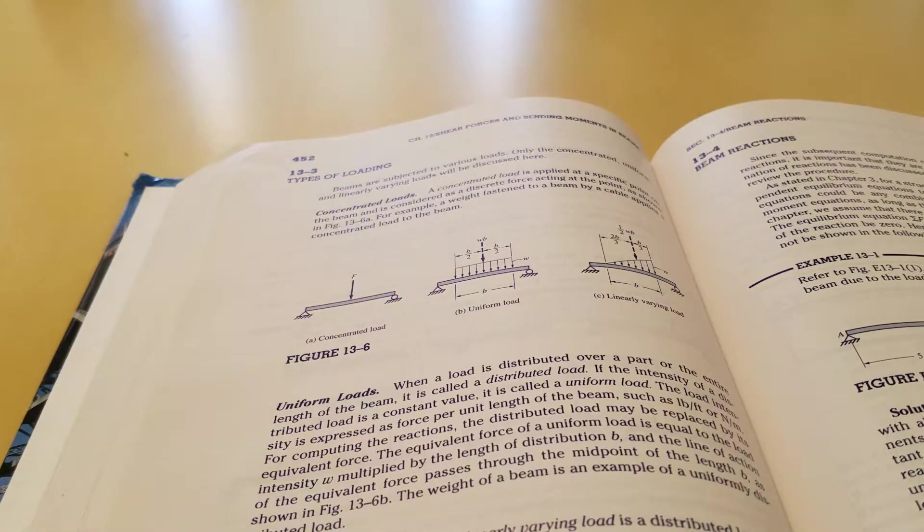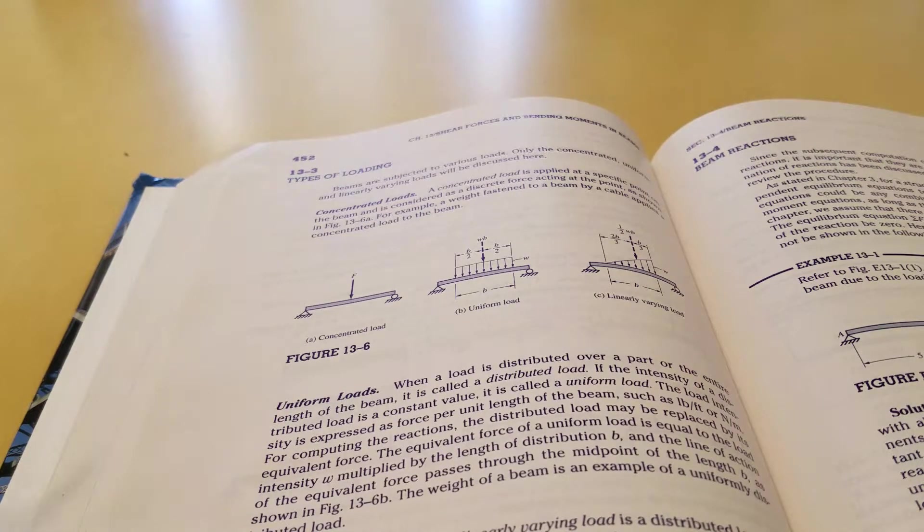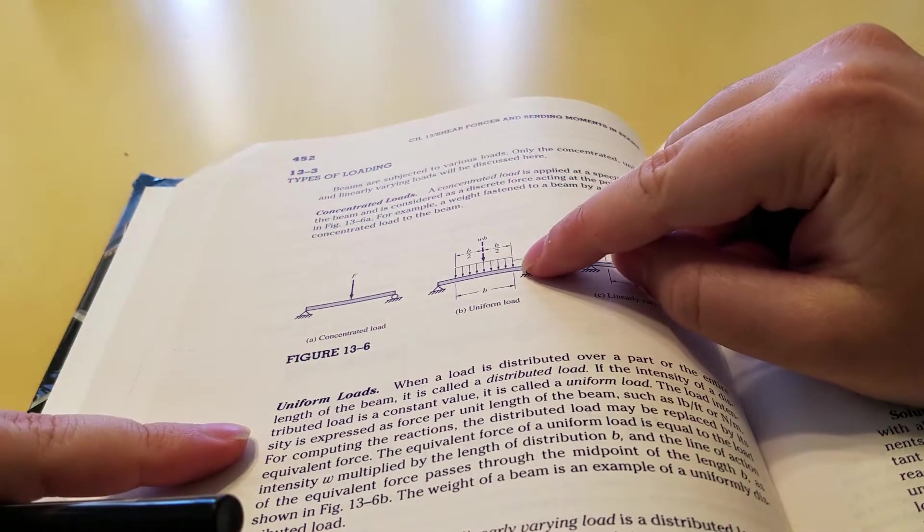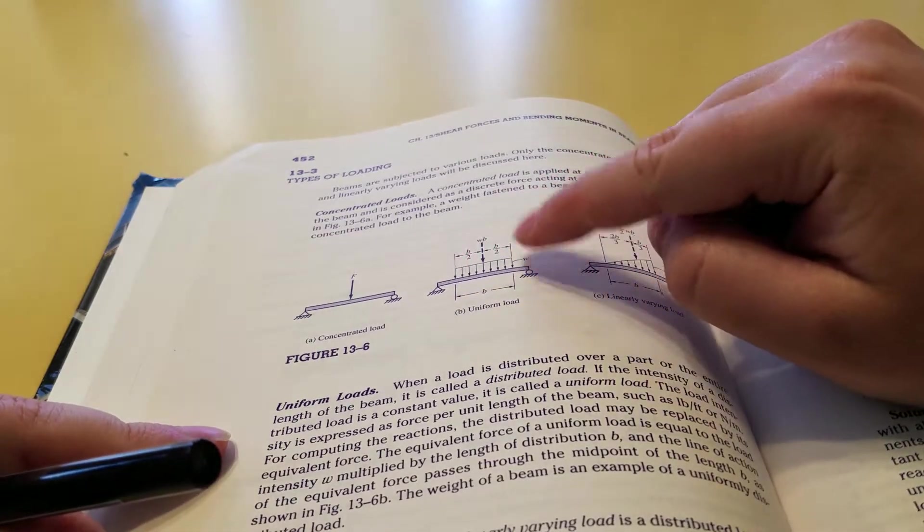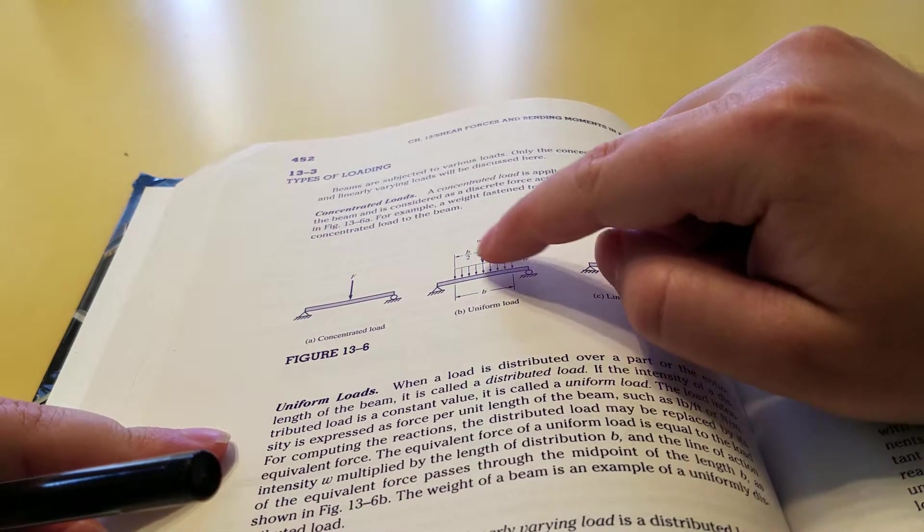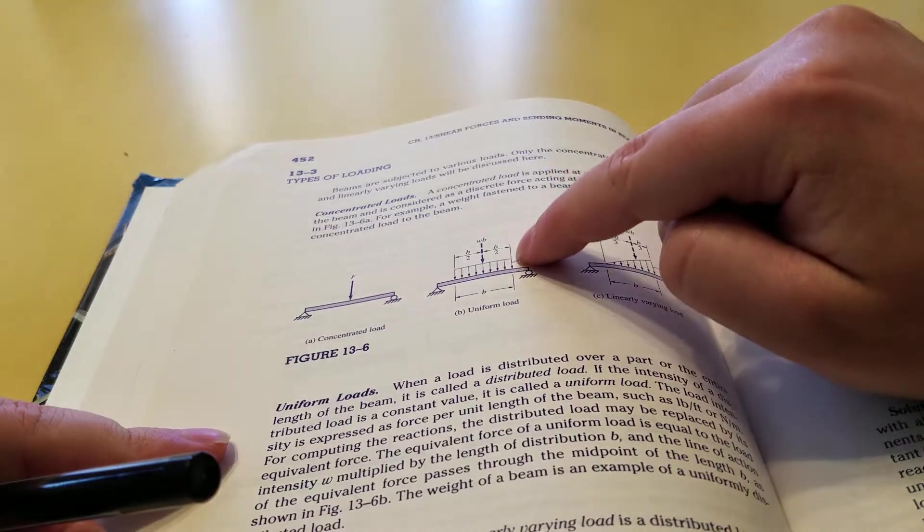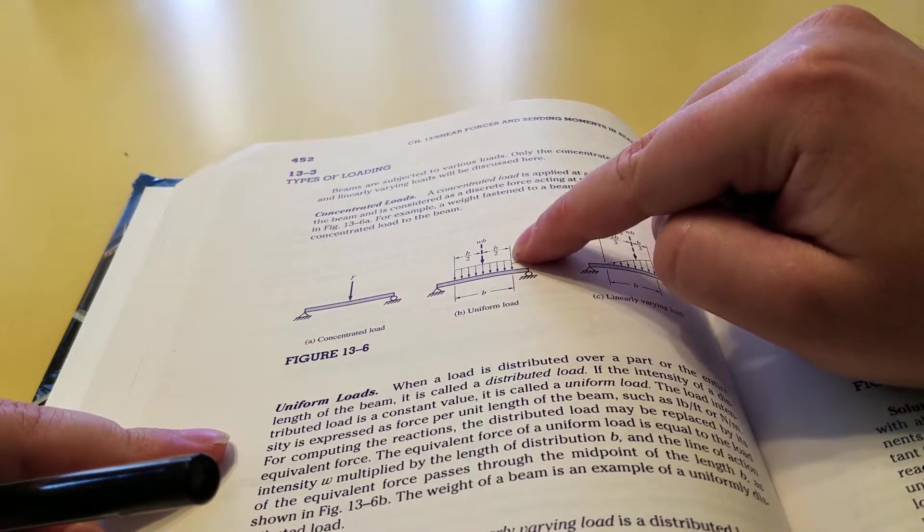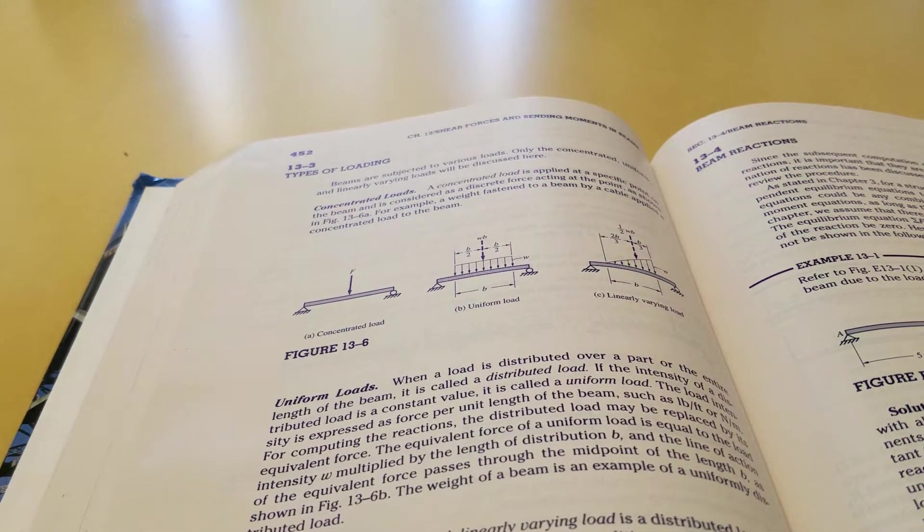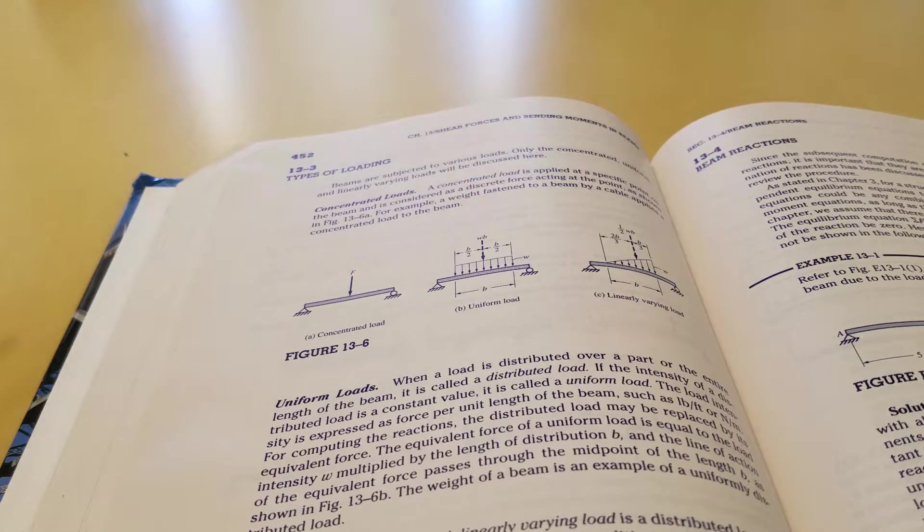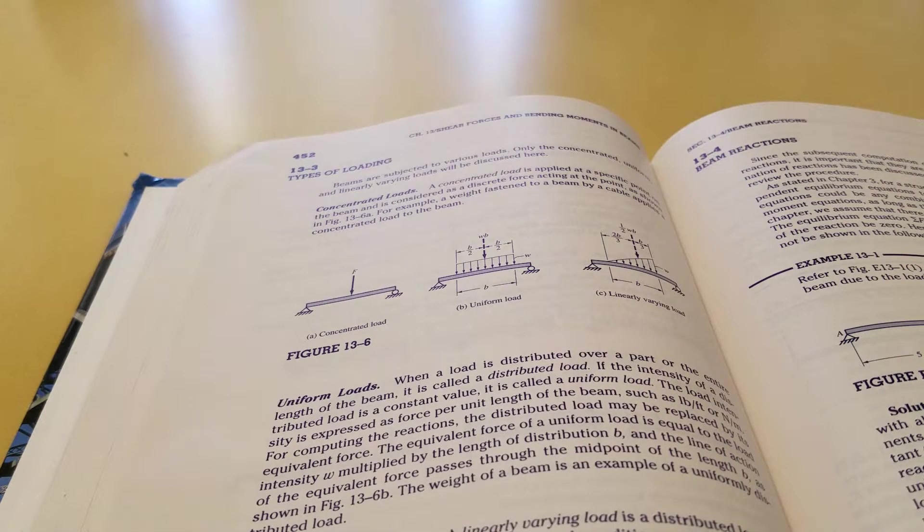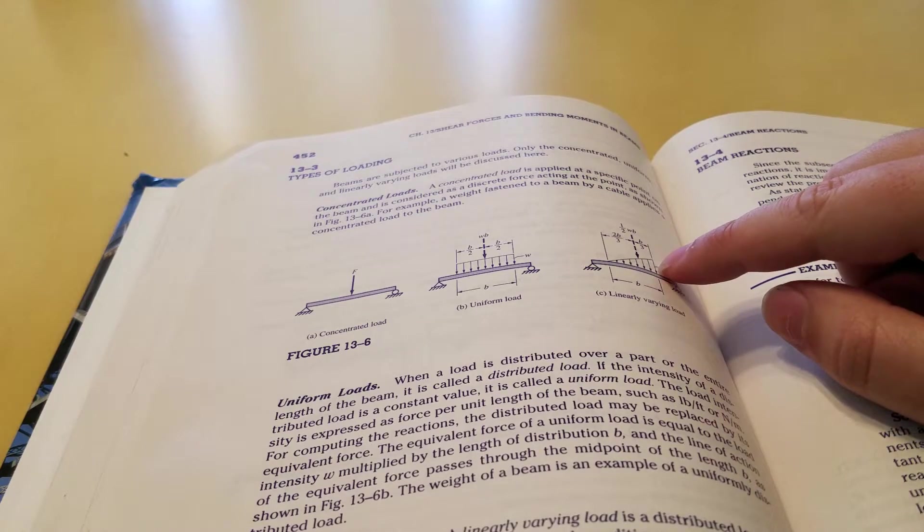Similarly, when you had a distributed load, it was the area of this box—just base times height. The height would be like 10 pounds per foot and the base would be 10 feet, so you'd multiply the two. This is a similar idea.